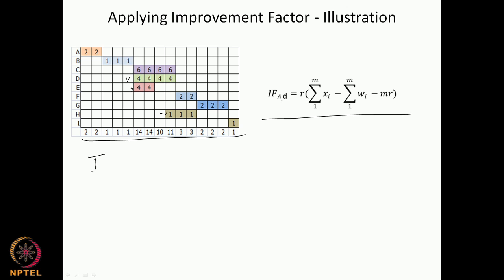If we start with the improvement factor for D shifted by 1 day, here D's Xi will be 14. So X for 1 day is equal to 14. What is going to happen is it is going to move on to this space. W is 3, M the shift of resources is by 1 day is 1, and R which is the resource rate is equal to 4.